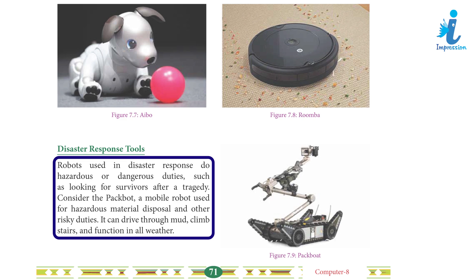Disaster Response Tools: Robots used in disaster response perform hazardous or dangerous duties, such as looking for survivors after a tragedy. Consider the PackBot — a mobile robot used for hazardous materials disposal and other risky duties. It can drive through mud, climb stairs, and function in all weather conditions.